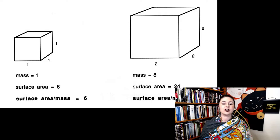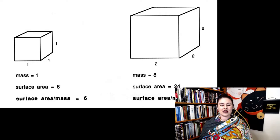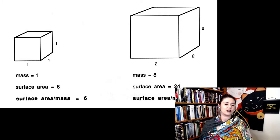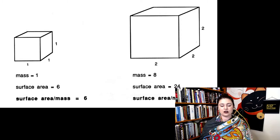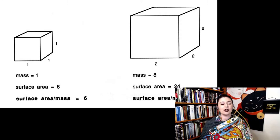our mass increases to 8, but the surface area increases to 24. Even though the surface area does increase, it doesn't increase as much as the mass does. So we do the same ratio, surface area divided by mass. Now we have a ratio of 3.